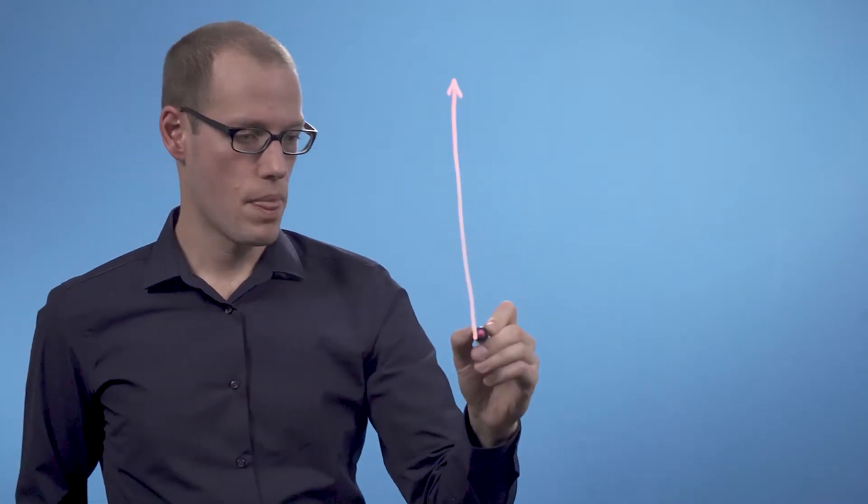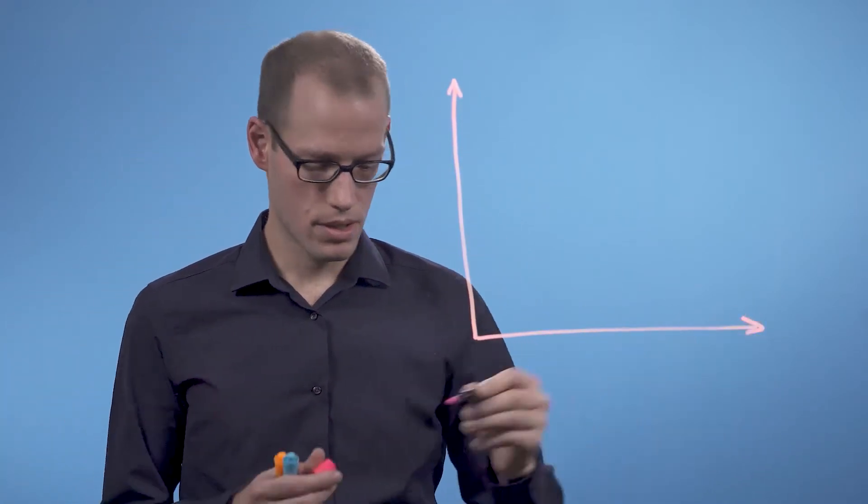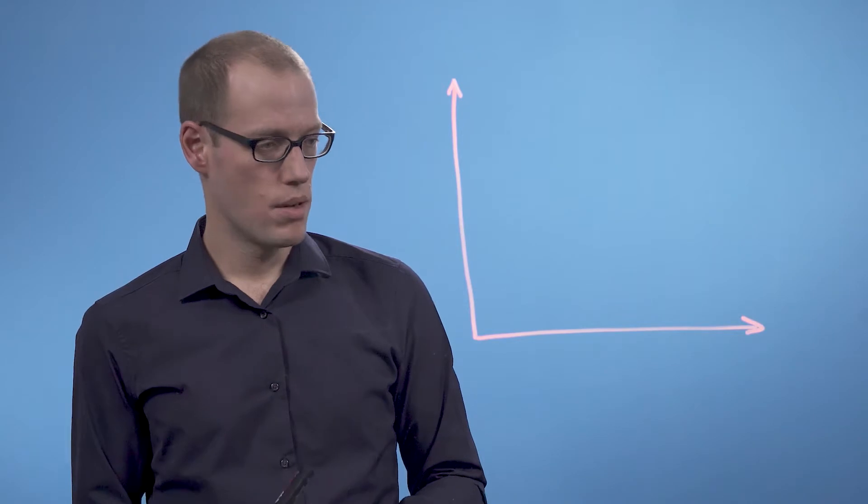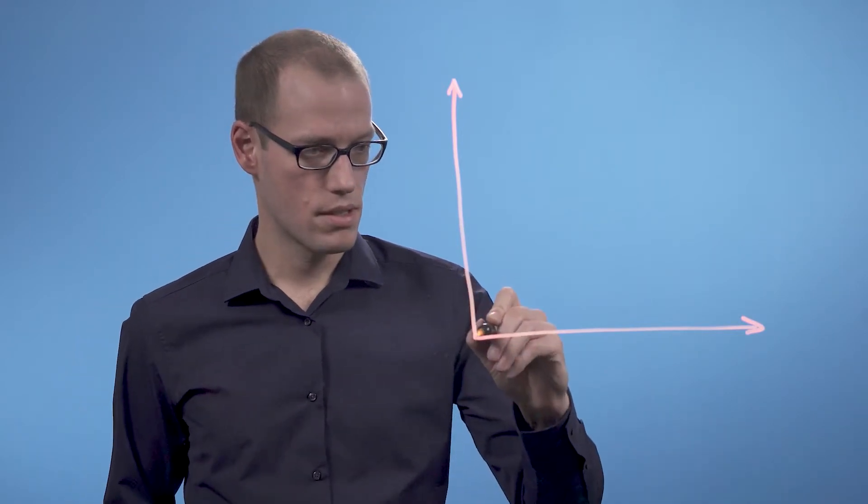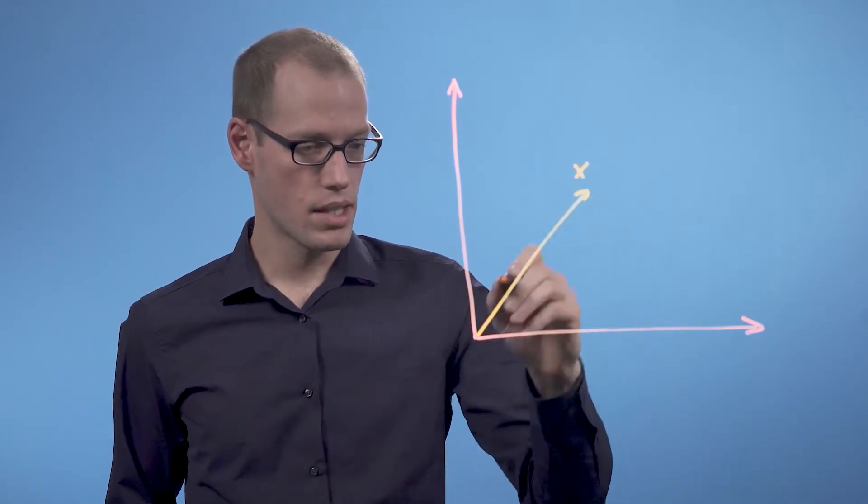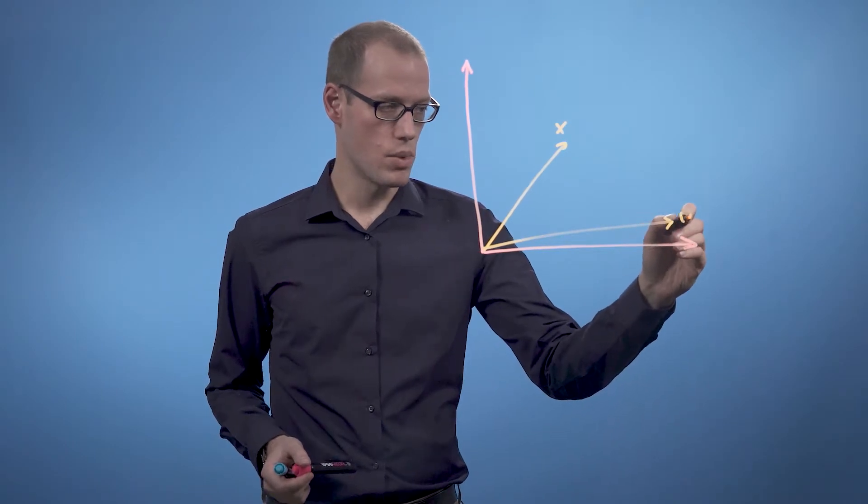Let's have a look at an example. Assume we're living in a two-dimensional world and we have two vectors, x and y.